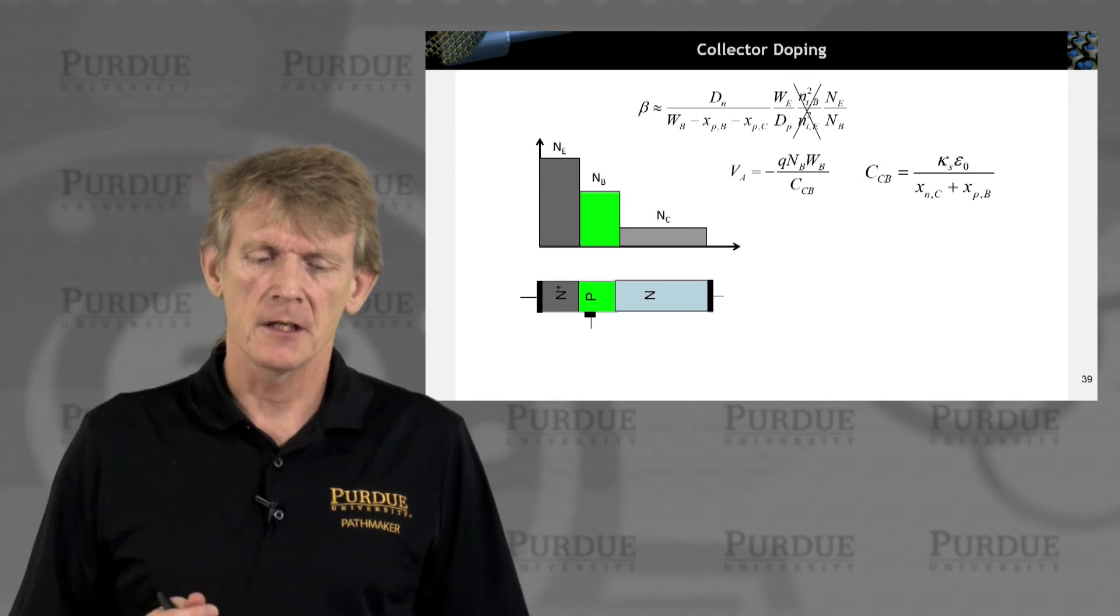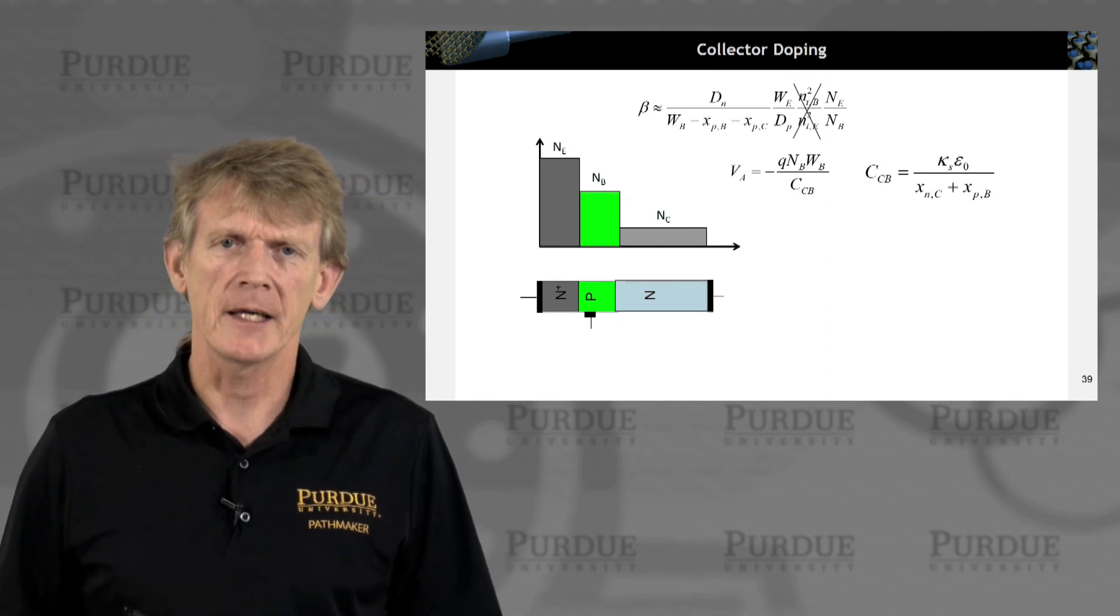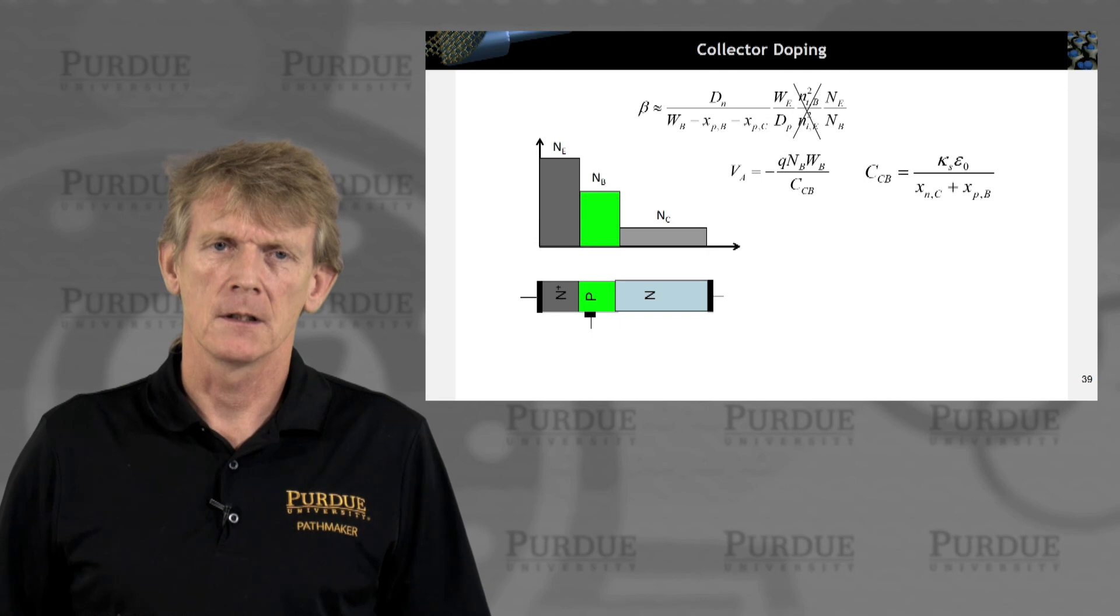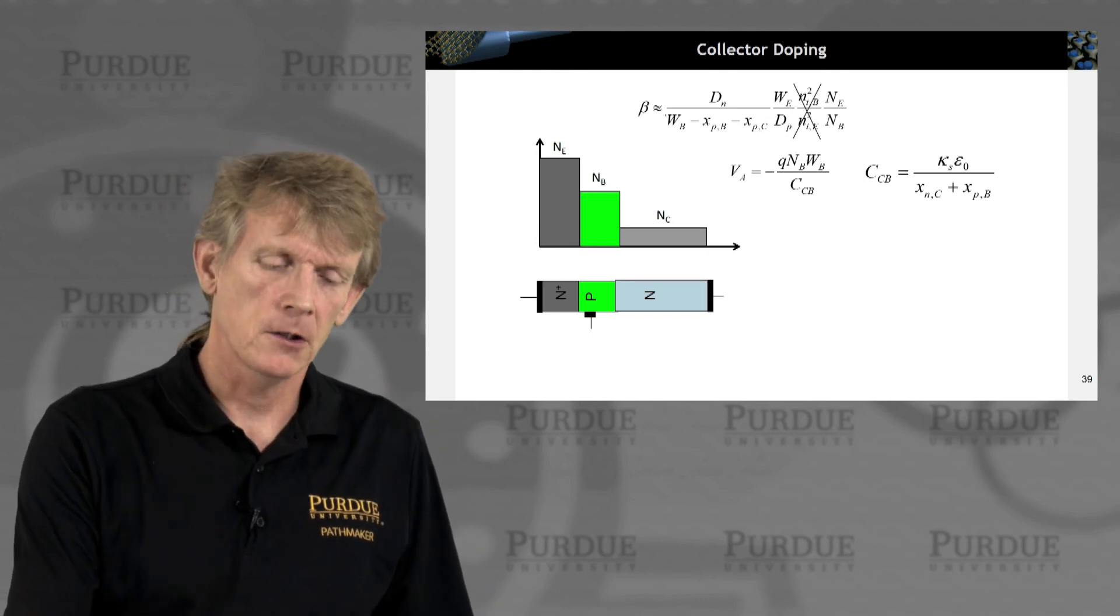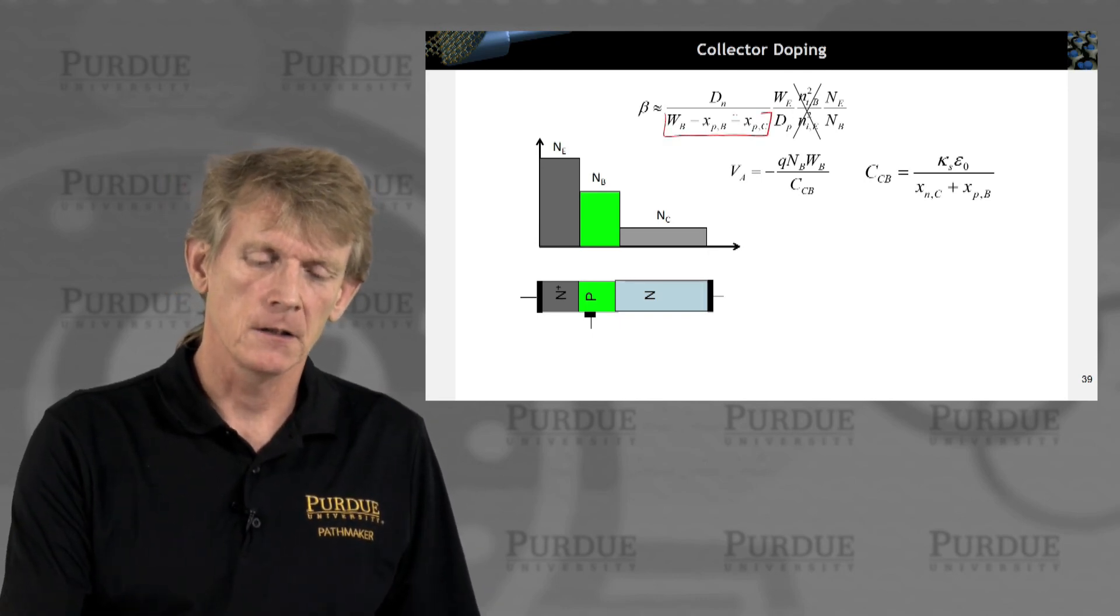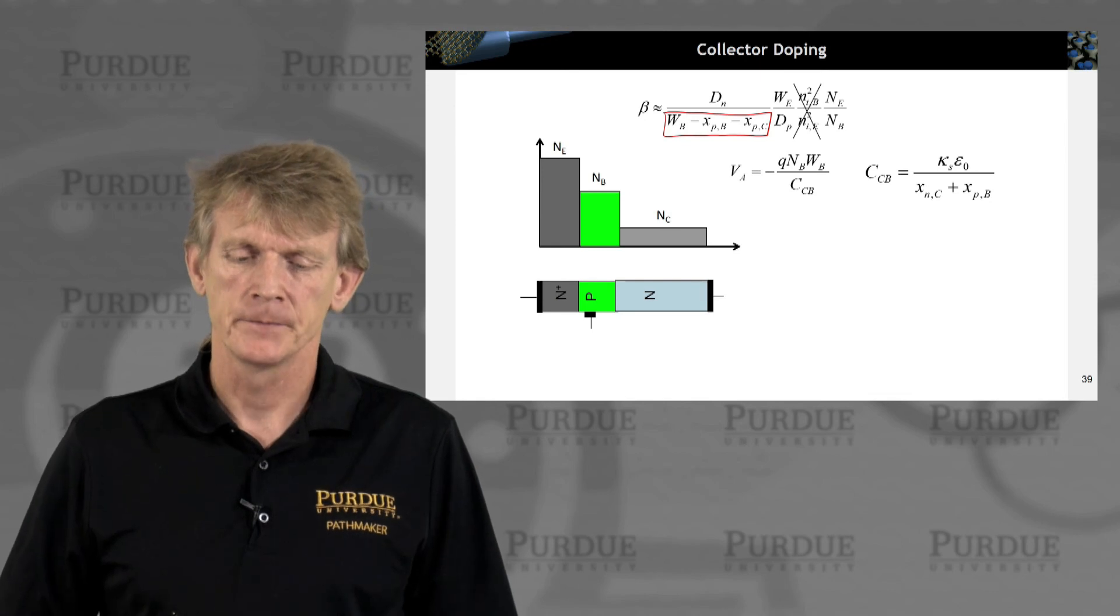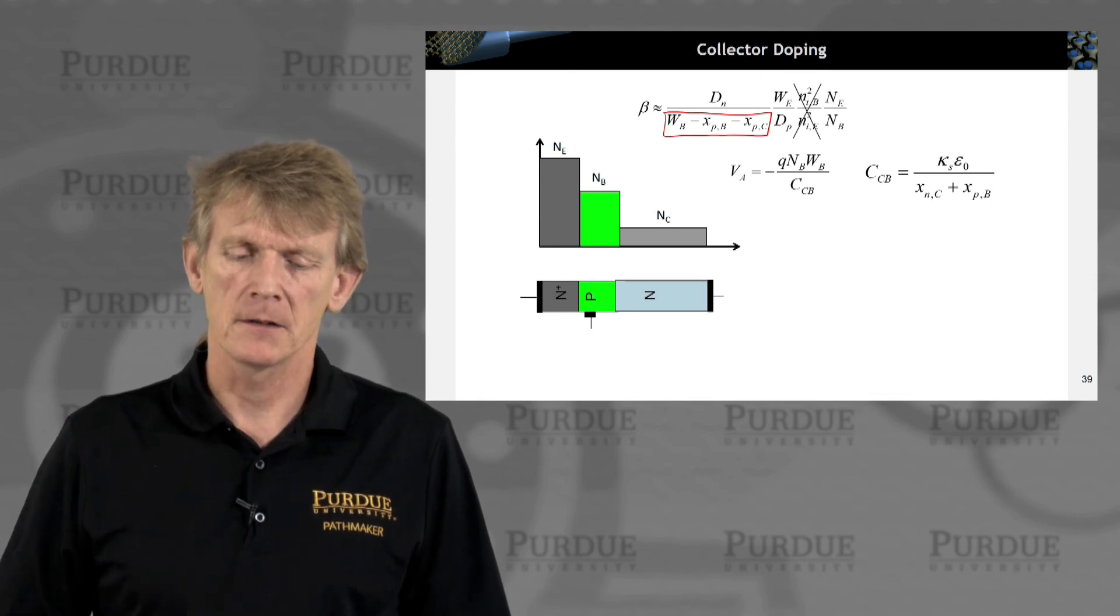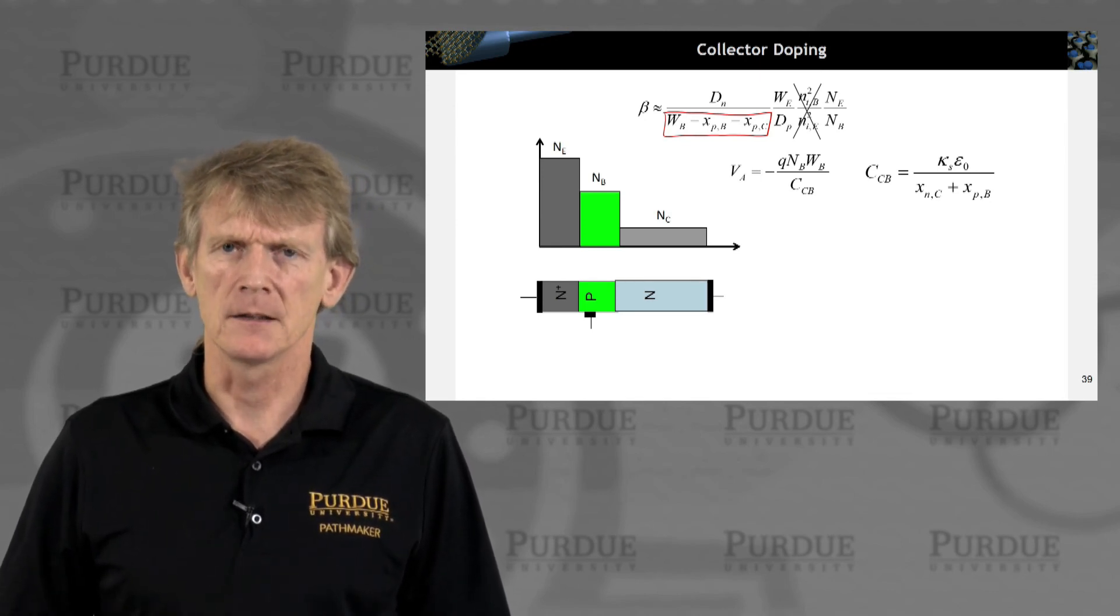So here again is the expression for beta, current gain, now including the electrical width in the base and keeping the other terms just as we had it before.